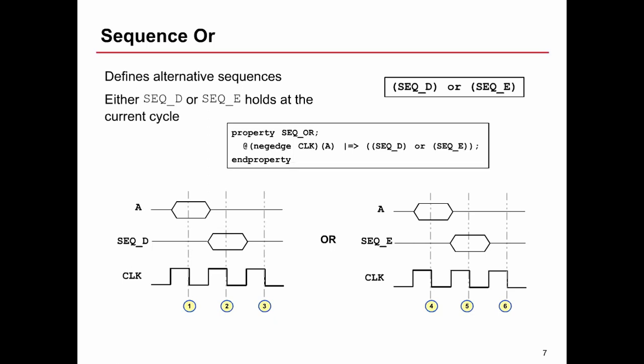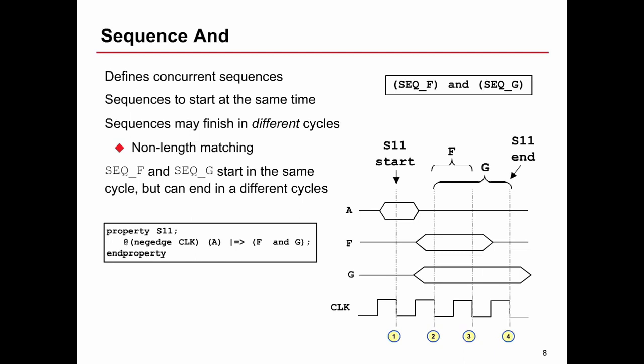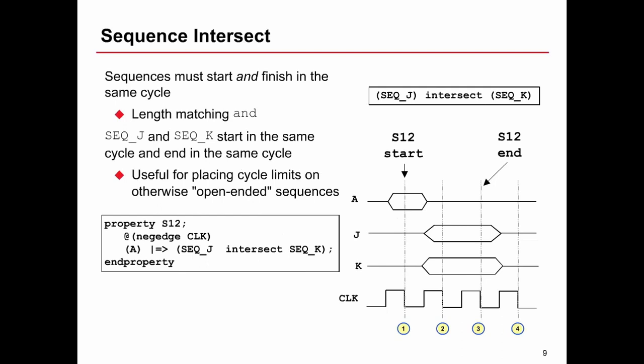As we can see from the timing diagram, either of those alternatives will meet our requirements. Sequence AND defines concurrent sequences which start at the same time but may potentially finish in different cycles. For that reason it's called non-length matching, because the lengths of the sequences do not need to be the same. The property says if A occurs, from the next cycle we have sequence F AND G. Both sequences must start on that cycle and both run to completion. When the longest one finishes is when the assertion passes.